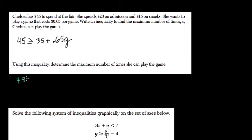So $45 is greater than or equal to $35 plus $0.65 per game. I'm going to subtract the money spent already. That will tell me how much is left. So I'll subtract $35 from both sides. And that's $10 is greater than or equal to $0.65G.